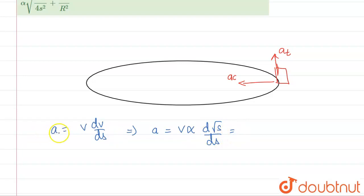This is the tangential acceleration. This will give us v times alpha divided by 2 root s. Since this is root s, this will be 1 over 2 root s.